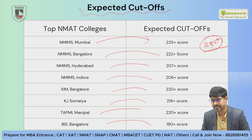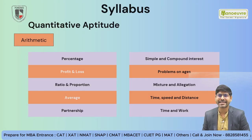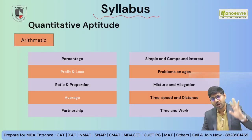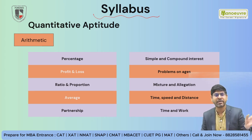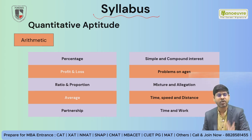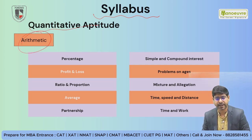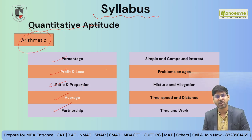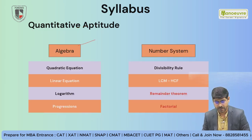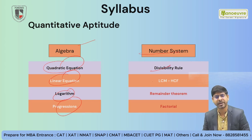Next is syllabus. For Quantitative section: if you have average math skills, you will be able to attempt questions at a moderate level with practice. Topics include percentage, profit and loss, ratio, average, partnership, simple and compound interest, problems on ages, mixture and allegation, time-speed-distance, and time and work. Followed by algebra: quadratic equations, linear equations, logarithm, progressions, number system, divisibility rules, LCM, HCF, remainder questions, and factorials.